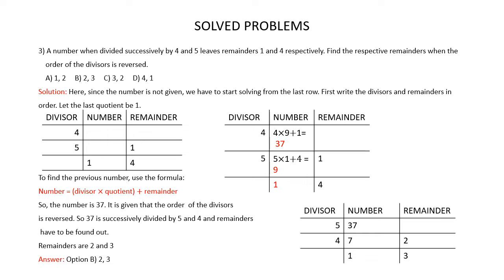To find the previous number, use the formula: number = divisor × quotient + remainder. With 1 as the last quotient, multiply 5 by 1 and add 4: 5 × 1 + 4 = 9. To find the previous number, multiply 4 by 9 and add 1: 4 × 9 + 1 = 37. So the number is 37.